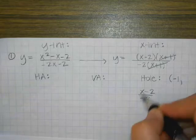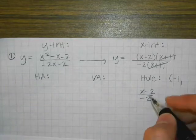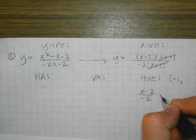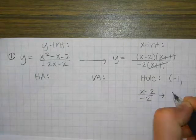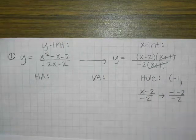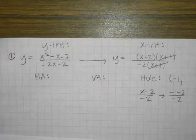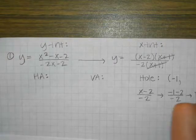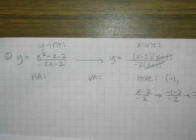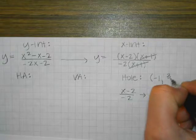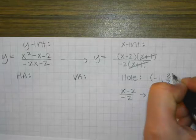So how do I use this to find the Y coordinate of the hole? Plug in that negative 1. So on the top I'm going to have negative 1 minus 2, and on the bottom I have negative 2. So negative 3 over negative 2. Those negatives are going to cancel and you're going to say that your Y coordinate is just 3 over 2.